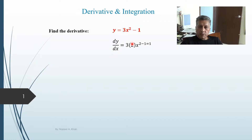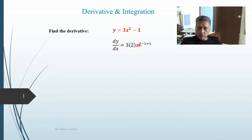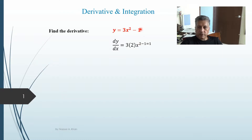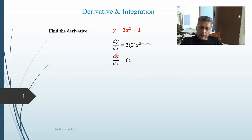I am going to multiply by two and reduce that power by one, so two minus one gives you one. You don't have to write the one — it's understood that every variable has a power of one if not stated differently. And of course this constant term becomes zero. Three times two is six, so we have 6x.